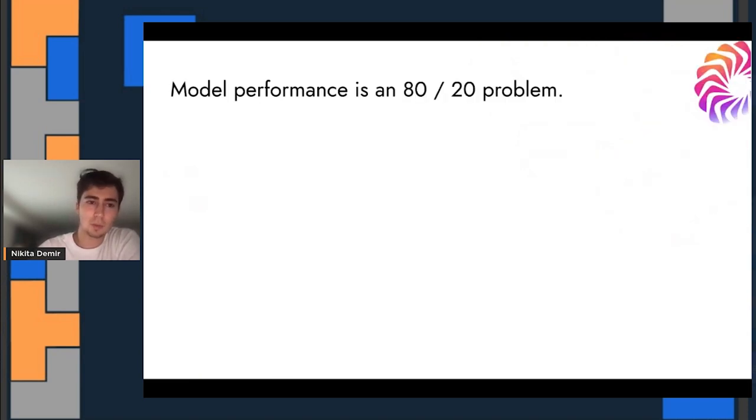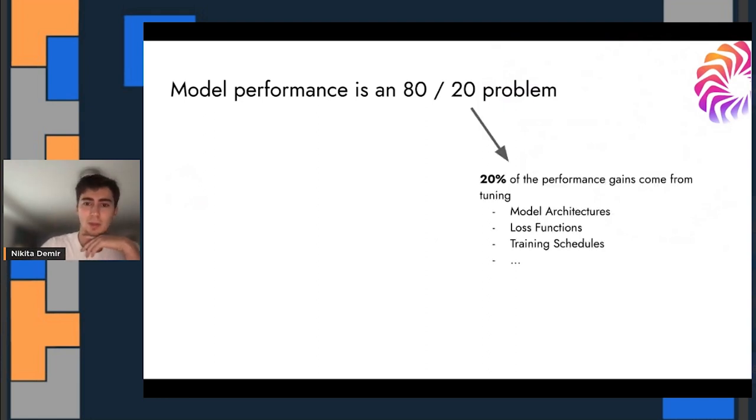Our thesis is that model performance is an 80-20 problem. What I mean by that is 20% of the performance gains come from tuning model architectures, loss functions, training schedules, the stuff that machine learning practitioners have been pretty focused on for the last few years as the industry has matured.